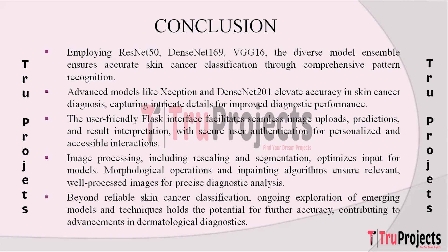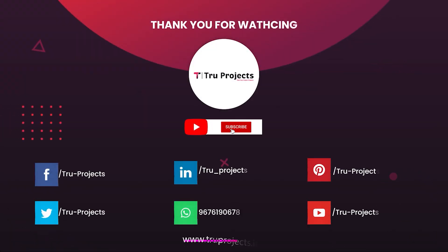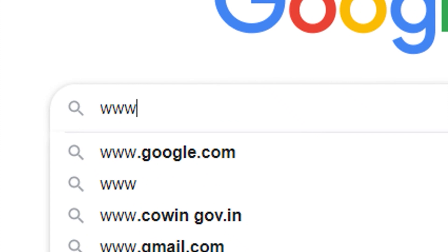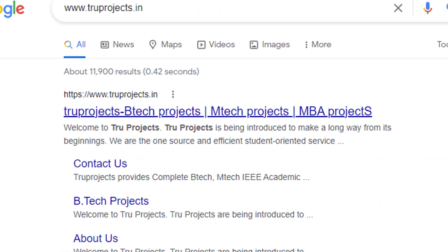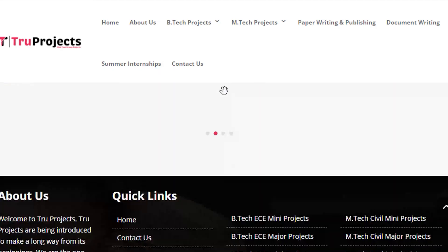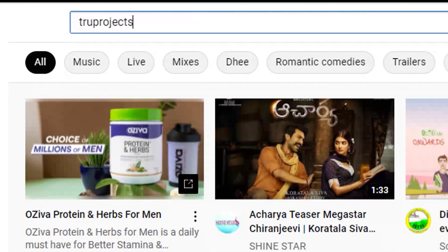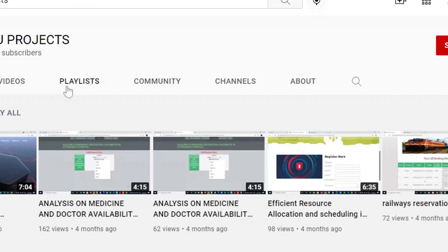Beyond providing a reliable skin cancer classification system, the project opens avenues for future enhancements. Continuous exploration of emerging models, pre-processing techniques, and design improvements holds potential to further elevate the system's accuracy. This project stands at the intersection of machine learning innovation and user-friendly design, contributing to advancements in dermatological diagnostics. Thank you for watching. For more projects, please visit www.trueprojects.in and subscribe to the True Projects YouTube channel.